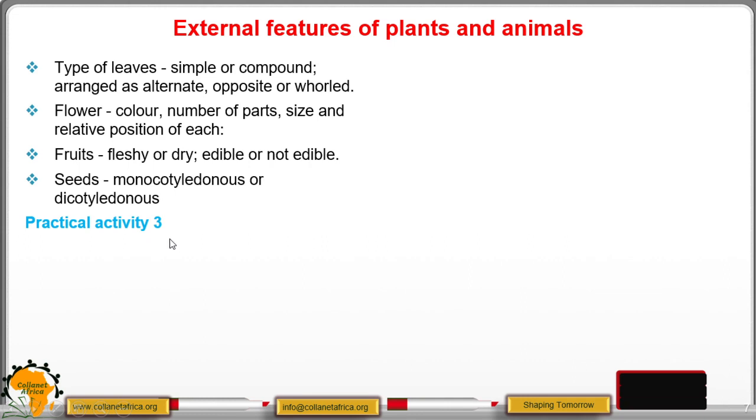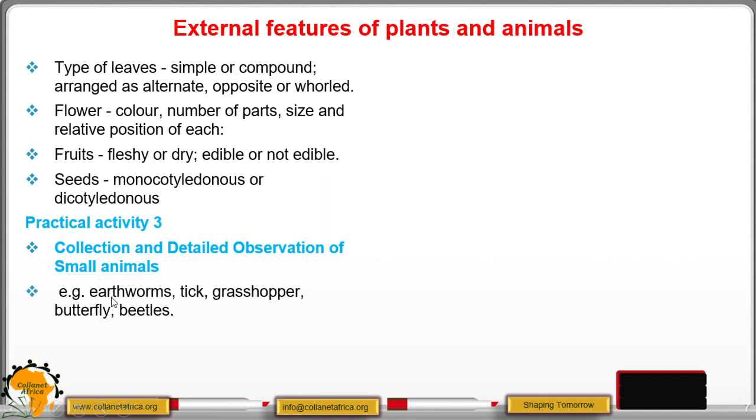So our final practical activity now, after having looked at the plant external features, you want to look at collection and detailed observation of small animals. So you just have to collect small animals like earthworms from the soil, we have ticks, collect the grasshoppers, butterflies, beetles.